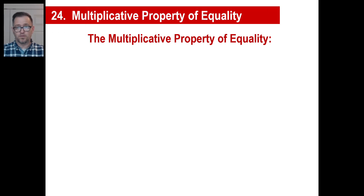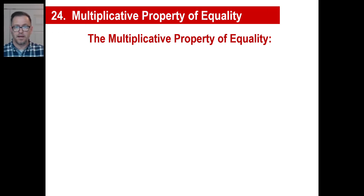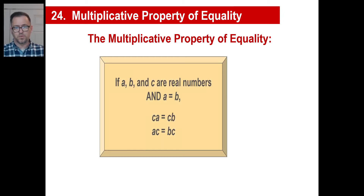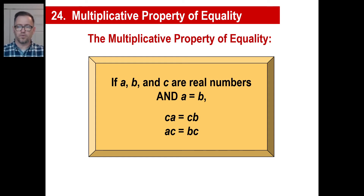Today we're going to do the multiplicative property of equality, which is exactly the same thing, instead of just multiplying. This is what it looks like. You don't have to write this down, but just understand what it means. A, B, and C are real numbers — we always use real numbers.